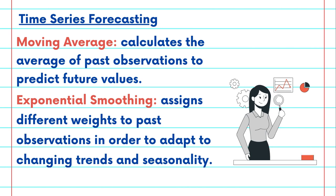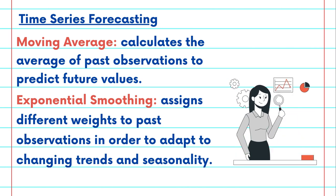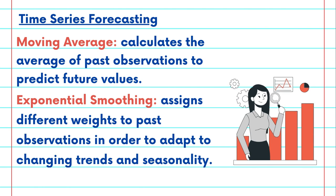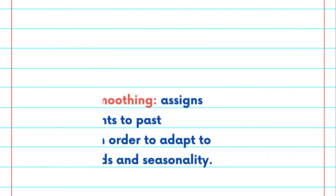Exponential smoothing takes the moving average concept further by assigning different weights to past observations. This allows the model to adapt to changing trends and seasonality.